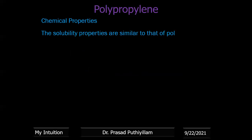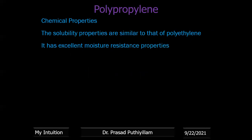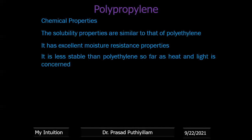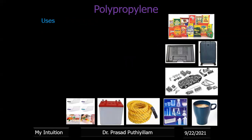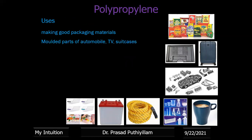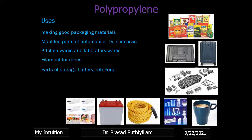Solubility properties of polypropylene are similar to those of polyethylene. It has excellent moisture-resistant properties — it will not absorb moisture or water. It is less stable than polyethylene with respect to heat and light degradation. Uses include good packaging materials, molded parts for automobiles, TVs, suitcases, kitchen wares, laboratory wares, filaments for ropes, and containers for batteries, refrigerator parts, and radar parts.